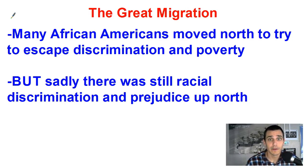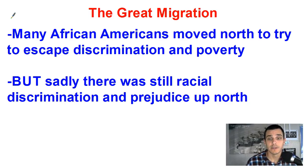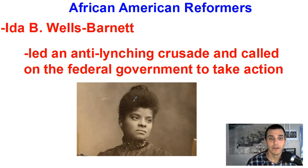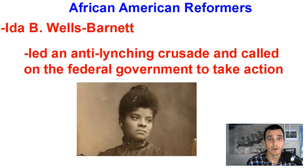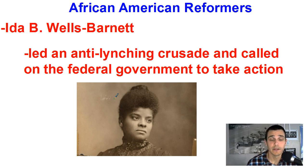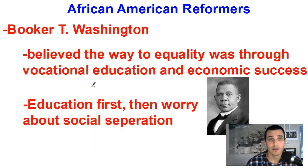What ends up happening is something called the Great Migration, where many African Americans moved to the North to try and escape these horrible Jim Crow laws in the South. But sadly, it might not be as bad in the North, but there still is some discrimination and prejudice. There were also people in the African American community looking to improve conditions. Ida B. Wells led an anti-lynching crusade and pressured the government to take action — obviously an important figure.